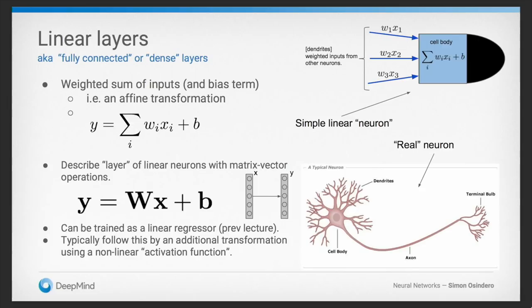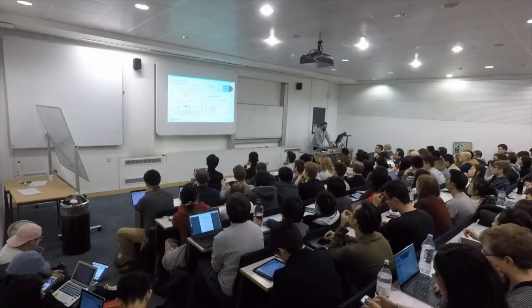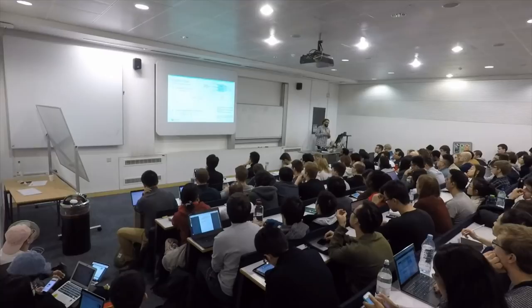If we have a whole collection of these simple linear neurons, we can move into matrix-vector notation. The vector y is a vector of linear neuron states, obtained by doing a matrix-vector multiplication between the inputs and our weight matrix W, plus some bias vector b. There's not an awful lot we can do with that setup — we are able to do linear regression — but in practice we typically combine these linear layers with some non-linearity, particularly if we're stacking them in depth.